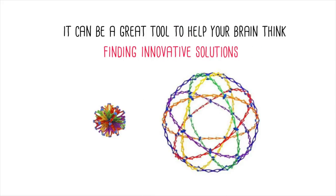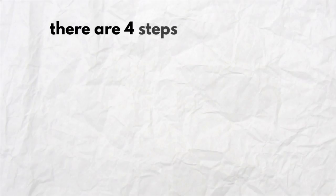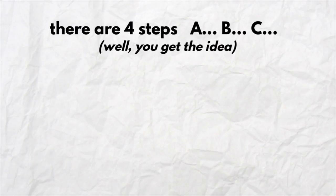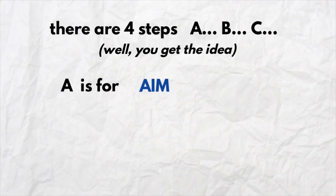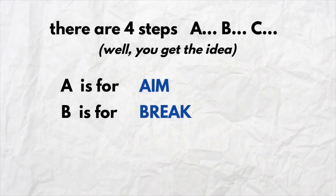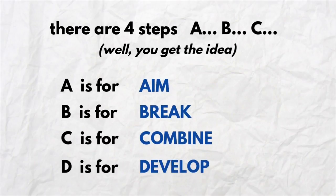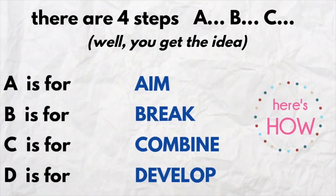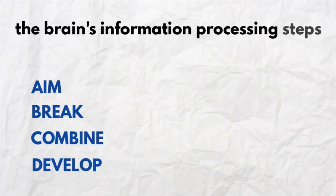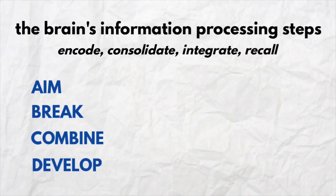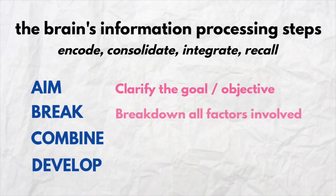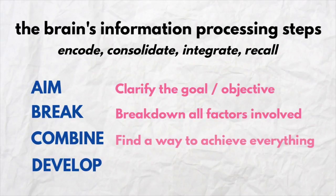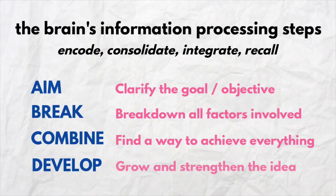Finding innovative solutions. There are four steps: A, B, C, and D. A is for Aim, B is for Break, C is for Combine, and D is for Develop. It follows the brain's information processing steps — starting with Aim, which is to clarify the goal and objective; Break, to break down all factors involved; Combine, to find a way to achieve everything; and Develop, to grow and strengthen the idea.